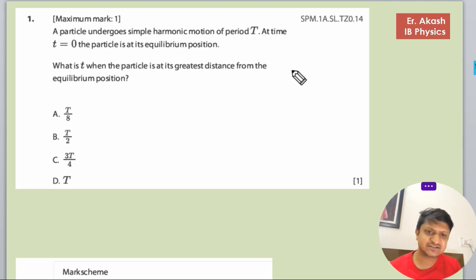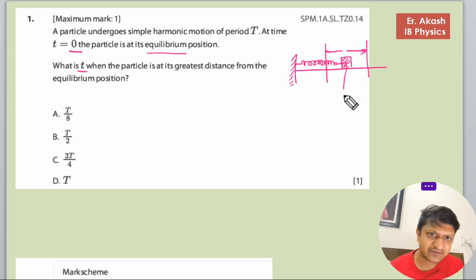Suppose there is some body here and this body is attached to a spring. This body is moving to and fro in SHM motion. It says that at time t when the particle is at the greatest distance, we have to find. At time t equals 0, the particle is at equilibrium position.